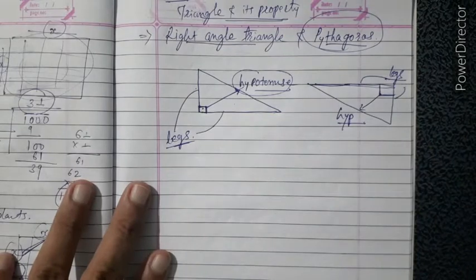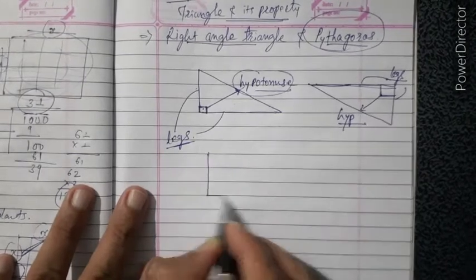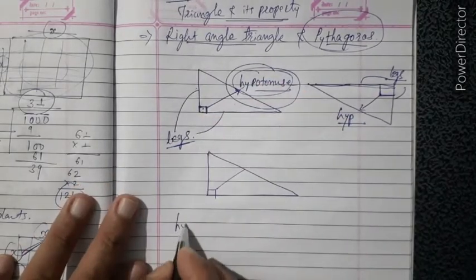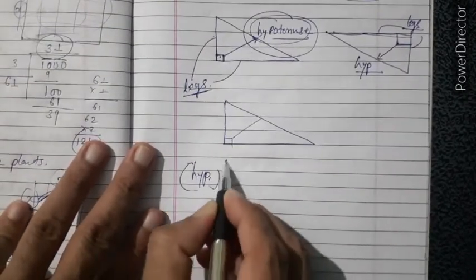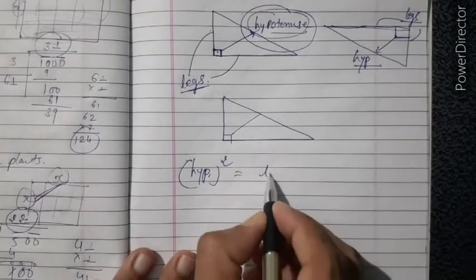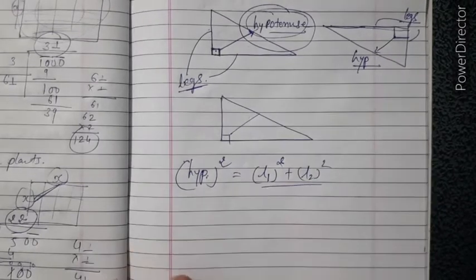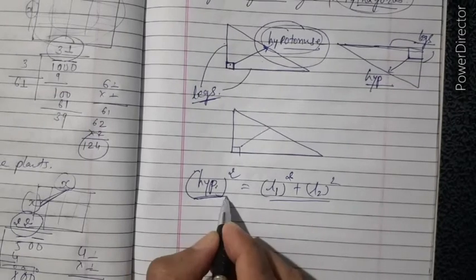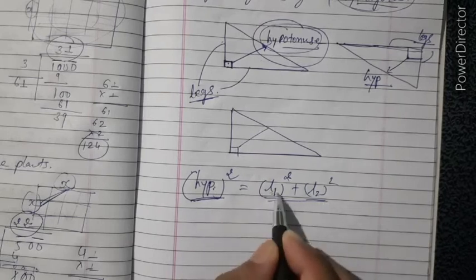According to Pythagoras, he proved that in a right angle triangle, the square of the length of the hypotenuse is equal to the sum of the squares of the other two sides. That is the Pythagoras property: the square on the hypotenuse is equal to the sum of the squares of its legs.